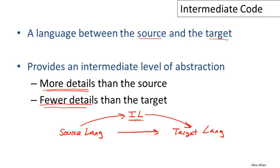Some compilers have more than one intermediate language. Some compilers actually translate through an entire series of intermediate languages between the source and the target language. We're only going to consider one intermediate language for the rest of this course.